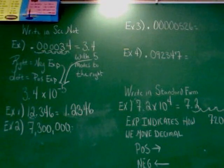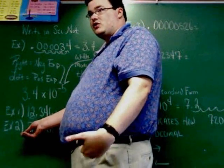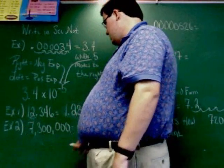What number does it go after? The seven, right. It goes after the first number that's not zero. Seven is the first number that's not a zero. It goes right there.